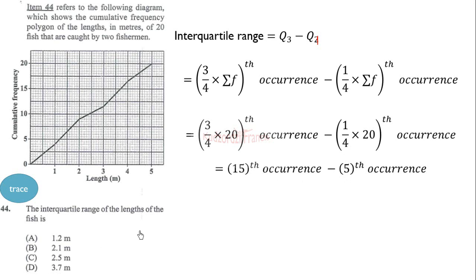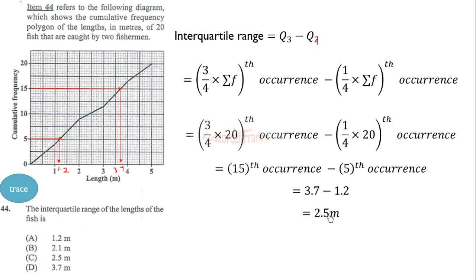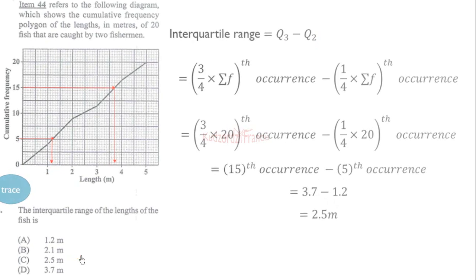Tracing the graph: the 15th occurrence corresponds to a value of 3.7, and the 5th occurrence corresponds to a value of 1.2. Subtracting gives 3.7 minus 1.2 equals 2.5 meters. So the interquartile range is 2.5 meters.